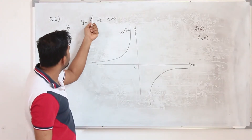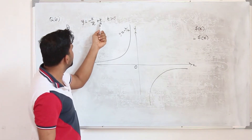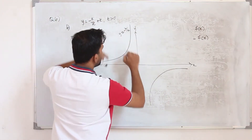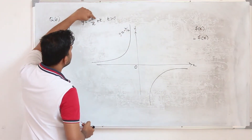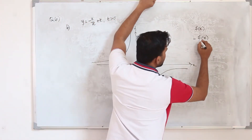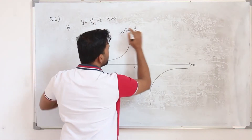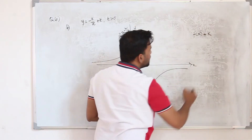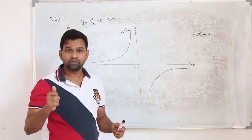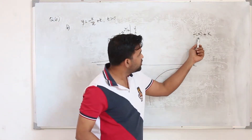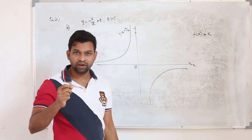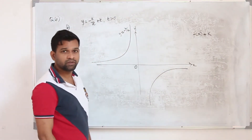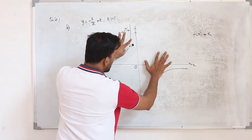They want you to sketch y equals minus k upon x plus k, where k is a positive number. We already have the graph of minus k upon x from part A. Now we are going to add a constant to the function. From graphs and transformations in chapter 4, when you add a constant to a function, the graph moves up k units if k is positive, or down k units if k is negative.